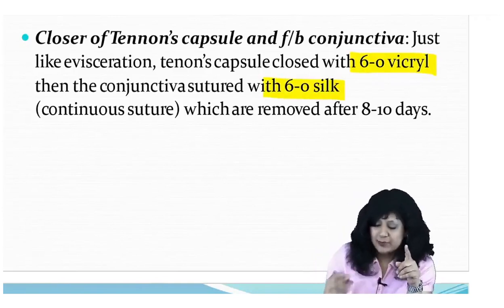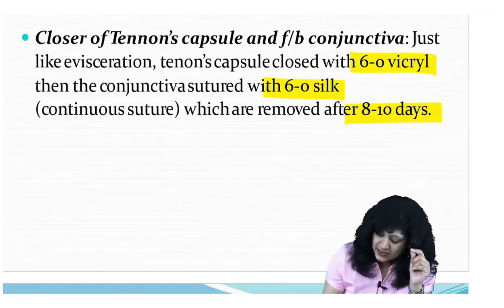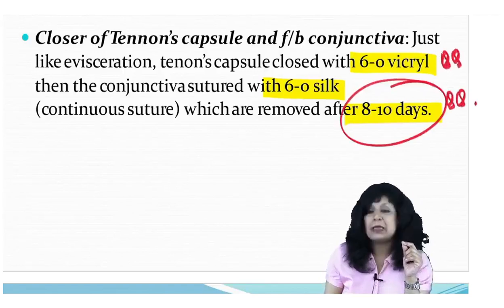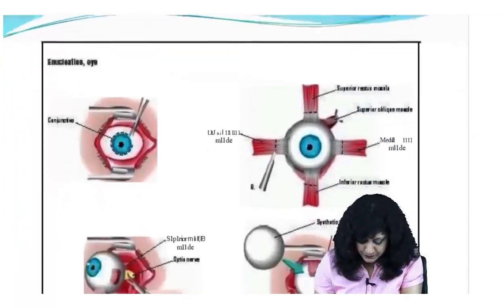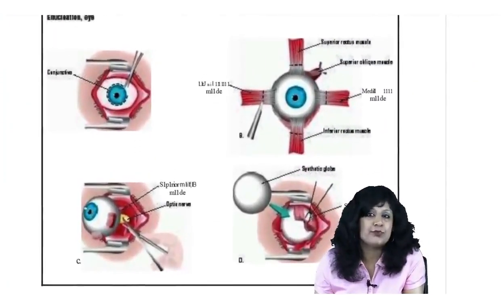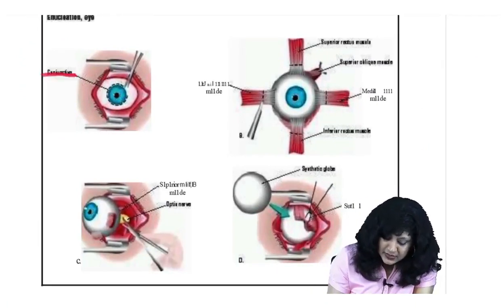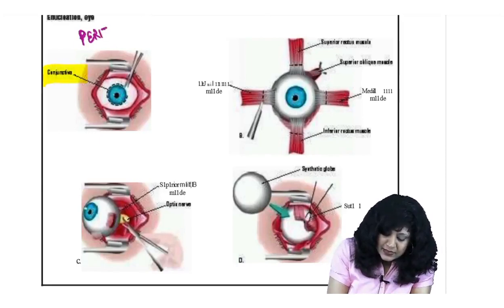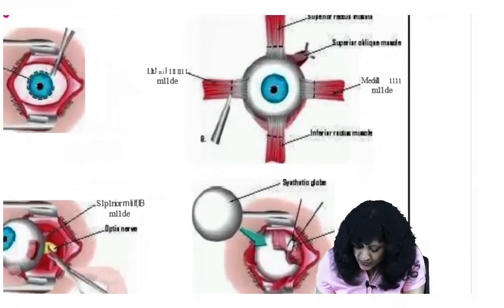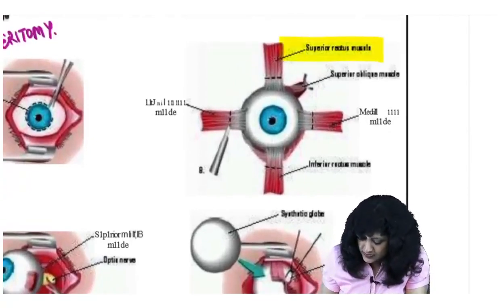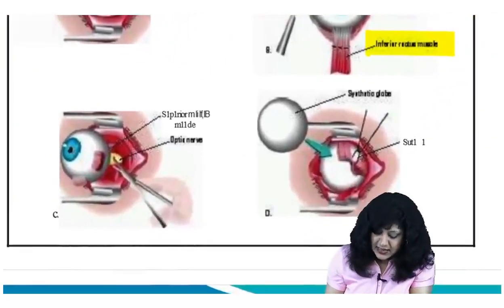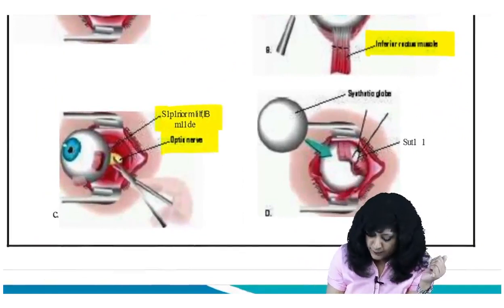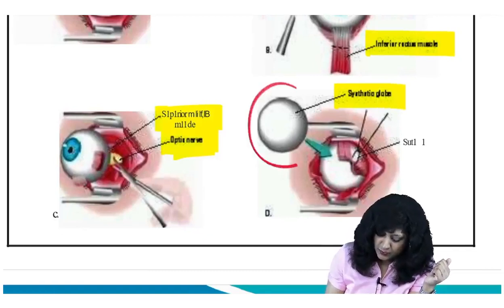Diagrammatically, the steps of enucleation are: Step 1 — 360-degree peritomy to excise the conjunctiva; Step 2 — hook the four rectus muscles (superior, inferior, medial, lateral) with a squint or muscle hook; Step 3 — separate the oblique muscles; Step 4 — cut the optic nerve using the enucleation scissors and enucleation guide; Step 5 — remove the eyeball.